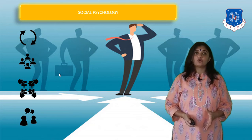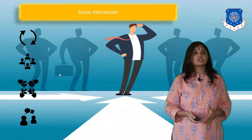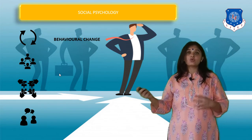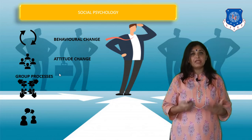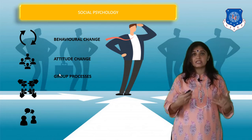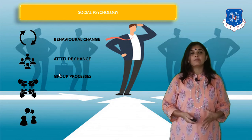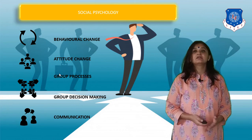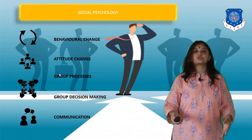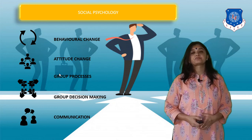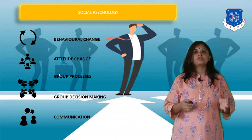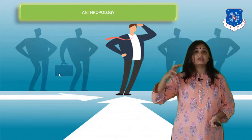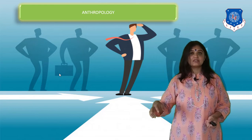Next, social psychology is the study of change in the behavior of a person due to an outside influence. It talks about behavioral changes, attitudinal changes, conflict resolution, group processes, group decision making, and communication within the group. Basically, it addresses the kind of change that comes because of either the real or perceived presence of another person.